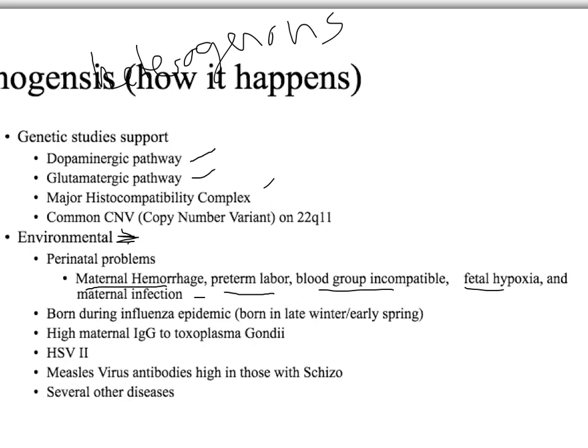One of the two subtypes of schizophrenia is strongly linked to being born during an influenza epidemic. People born in late winter or early spring have a very strong association with a specific, more environmentally linked subtype of schizophrenia. My brother's birthday is December 20th, 1992, and there was a flu going around at that time, placing him within a flu epidemic.